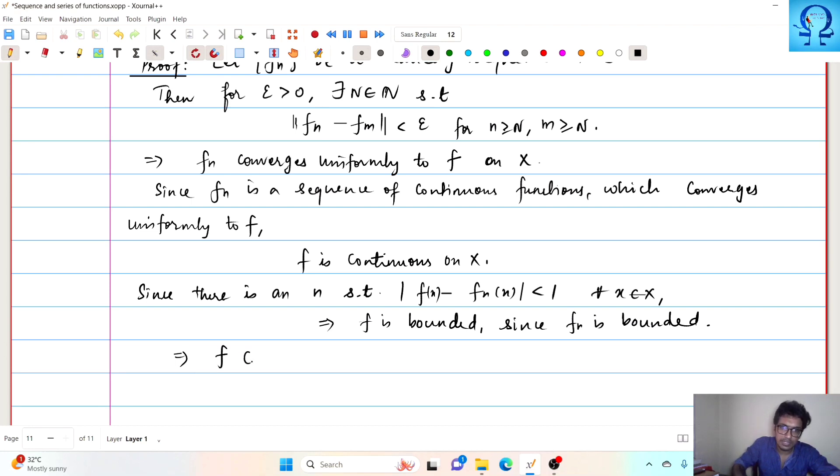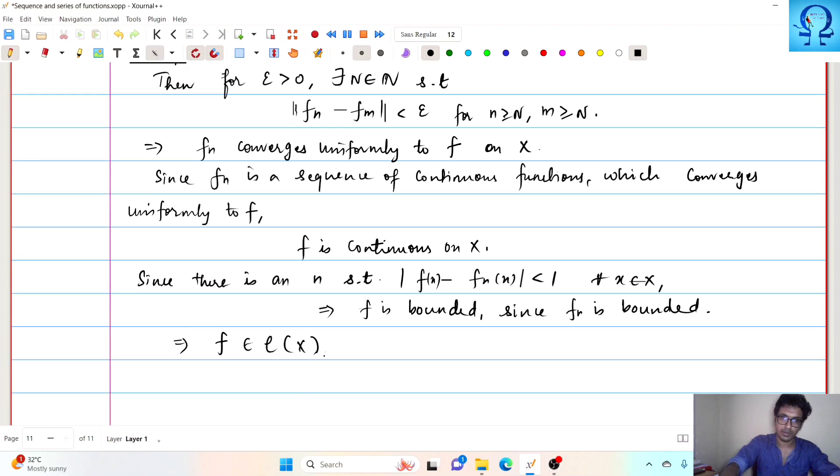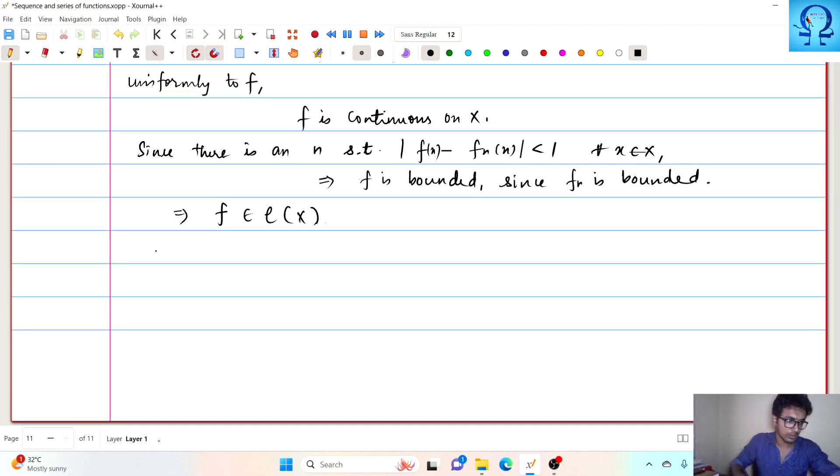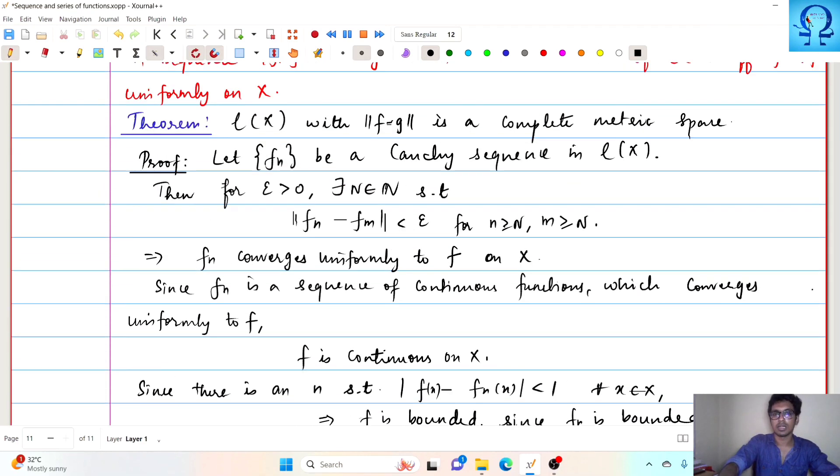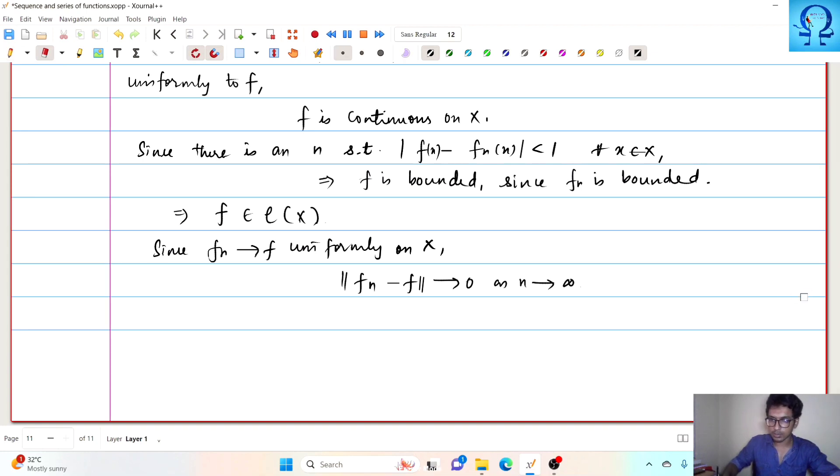So we just have proved that f is a member of this script C of X. And now since f_n converges to f uniformly on X, we are able to see that norm f_n minus f goes to 0 as n approaches to infinity. And this just proved the convergence of this Cauchy sequence in C of X. So this proves the script C of X is a complete metric space. This completes the proof. Thank you.